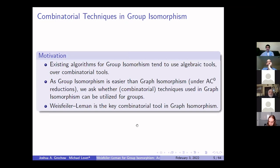Why consider combinatorial tools for group isomorphism? First, recall that group isomorphism algorithms tend to focus on algebraic techniques — combinatorial techniques really haven't been tried. Additionally, since group isomorphism is easier than graph isomorphism under AC0 reductions, it's very natural to ask whether we can adapt techniques from graph isomorphism to the setting of groups. Weisfeiler-Lehman is the key combinatorial tool that subsumes all combinatorial approaches for graph isomorphism and is used in basically every state-of-the-art algorithm, both theoretical and practical.